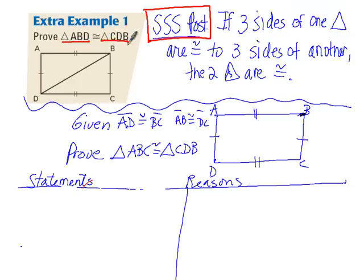For example, in this one, they're asking us to prove triangle ABD is congruent to triangle CDB. There's four methods for proving triangles congruent, and we're going to look at the first one today, which is side,